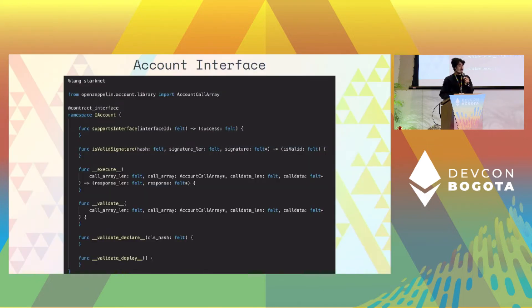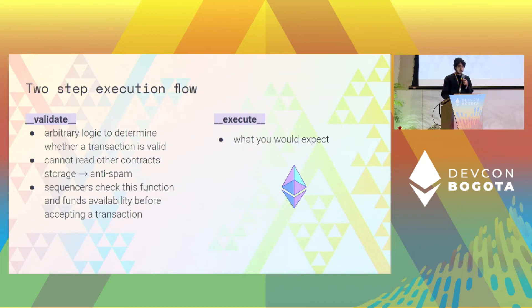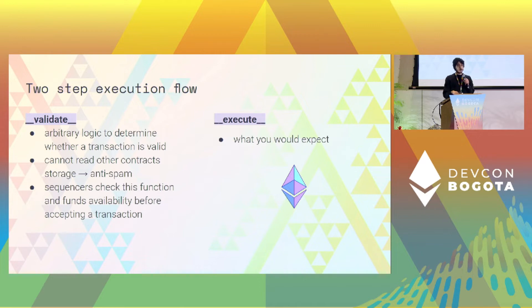This is basically the interface of an account. We're going to focus on the last four: execute, validate, validate_declare, and validate_deploy. We can think of this as a two-step execution flow. First, the validate step — you can define arbitrary logic to determine whether a transaction is valid or not.